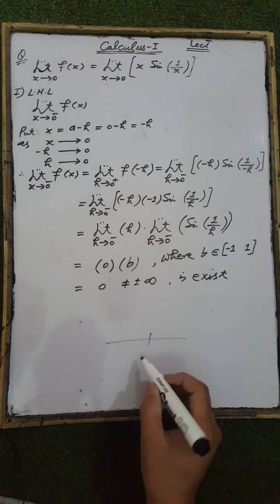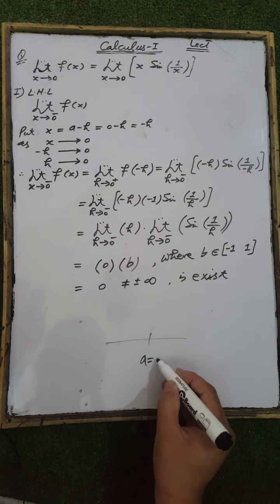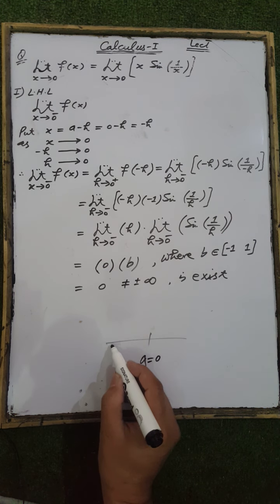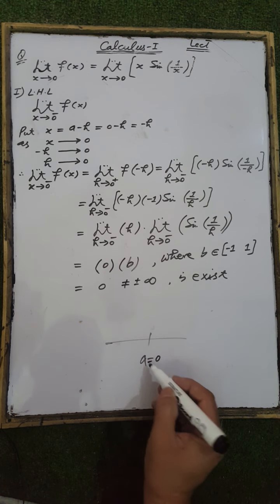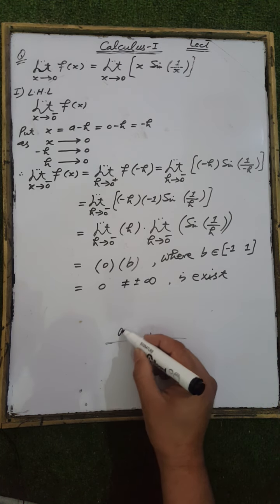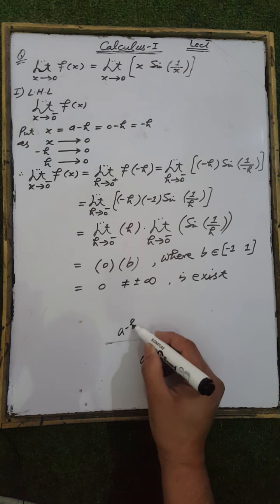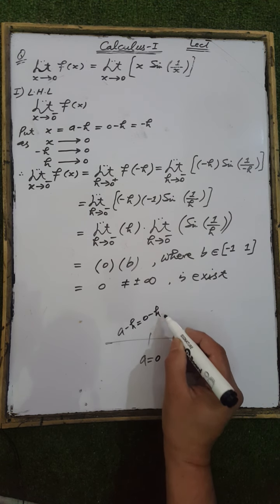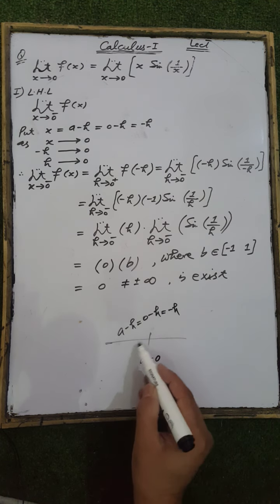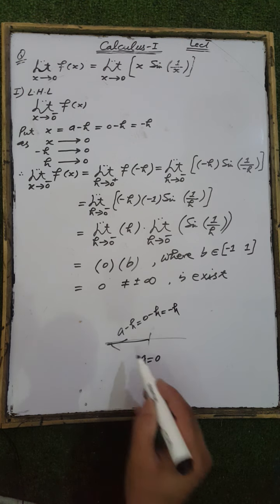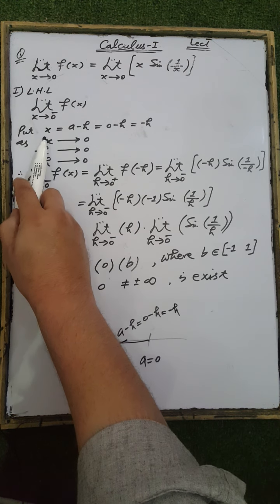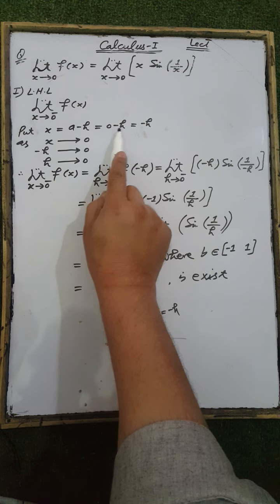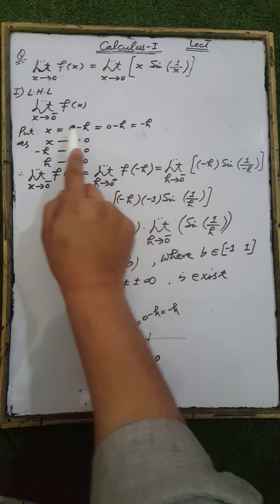The left-hand points of the neighborhood of a point a = 0 are in the form of a minus h. In this case a = 0, so 0 minus h = minus h. Therefore, put x = a minus h; since a = 0, we get x = minus h.